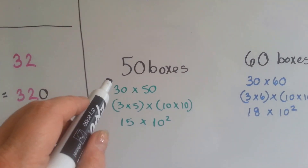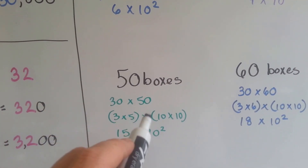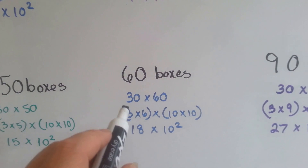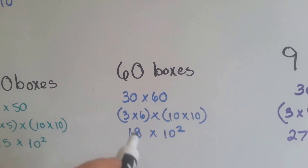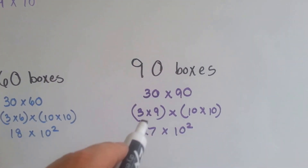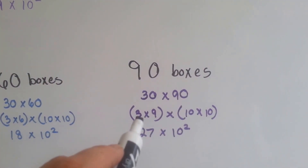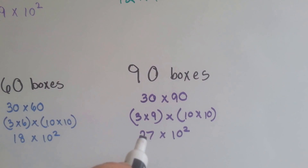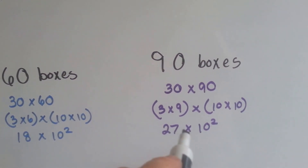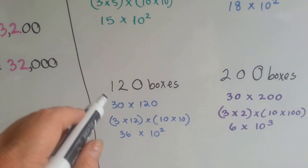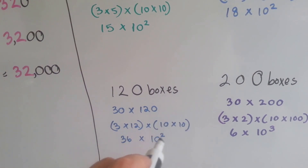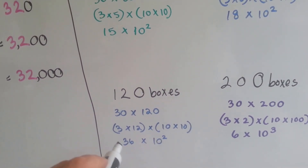We could keep doing this. 30 times 50 would be the 3 and the 5 times 10 times 10: 15 times 10 to the second power — 2 zeros. For 30 times 60, we get 18 times 10 to the second power. If it were 90 boxes, 30 times 90 gives us 27 times 10 to the second power — 2,700. For 120 boxes, we group 12 with 3: 3 times 12 is 36, and 10 times 10 is 10 to the second power, giving us 3,600.